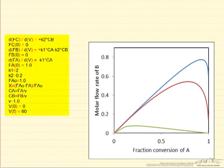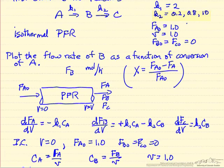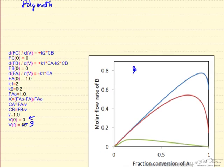We're using POLYMATH to solve these ordinary differential equations. The POLYMATH program on the left shows the differential equations, initial conditions, rate constants, inlet flow rate, conversion calculations, and the relation between concentrations and molar flow rates. We integrate up to a volume of 3, which is sufficient for the conversion. The three plots show molar flow rate FB on the y-axis versus fractional conversion of A, corresponding to K2/K1 ratios of 0.1, 0.4, and 10.